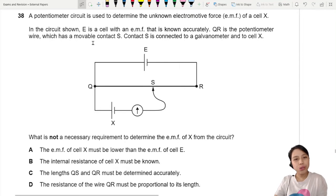A potentiometer circuit is used to determine the unknown EMF of cell X. Where's cell X? We don't know what this EMF is. In the circuit shown, E is a cell with EMF that is known. QR is a potentiometer wire, and you have a contact S which can be moved around. So contact S is connected to a galvanometer and to cell X.